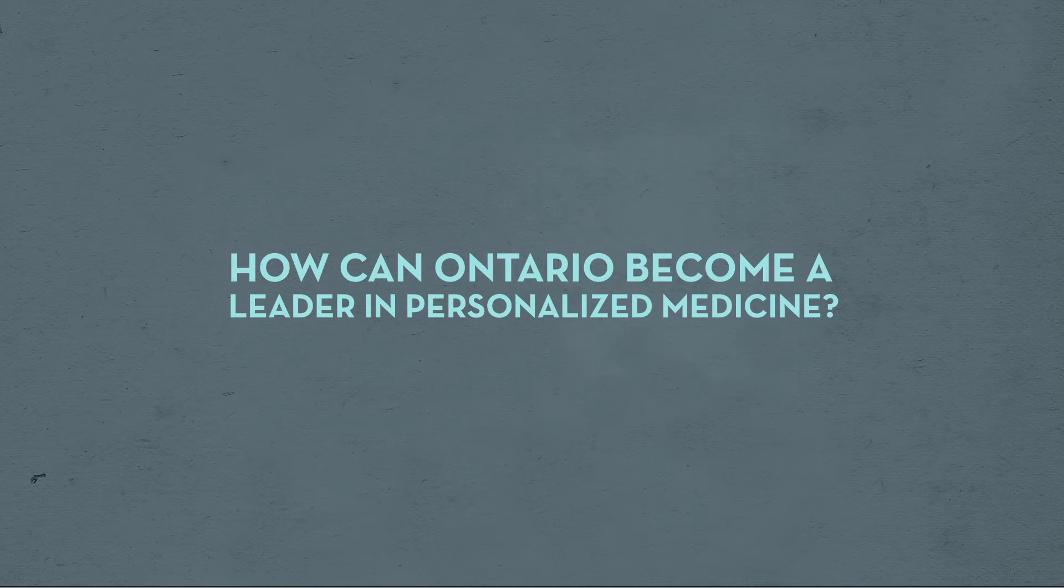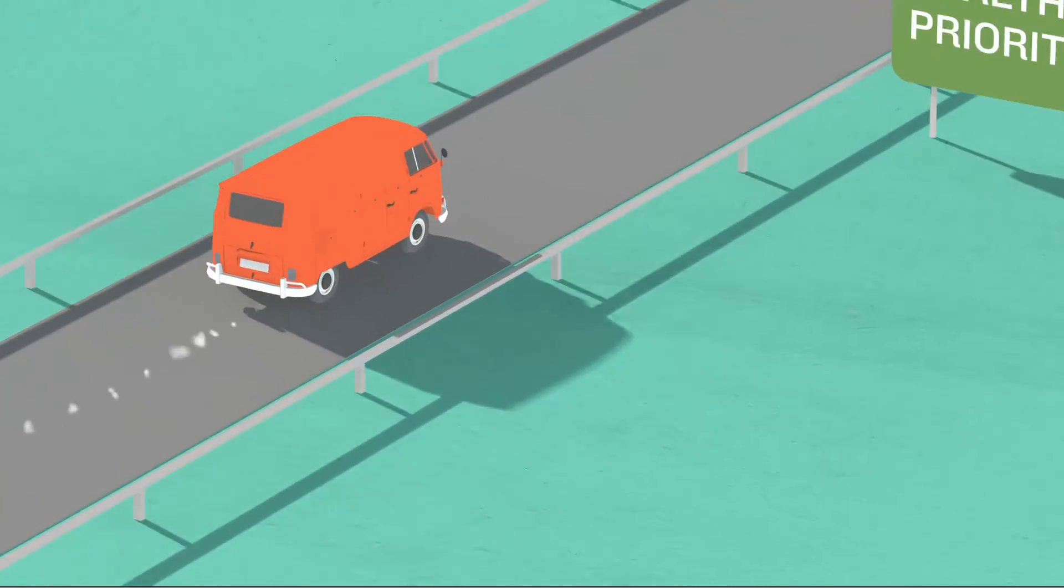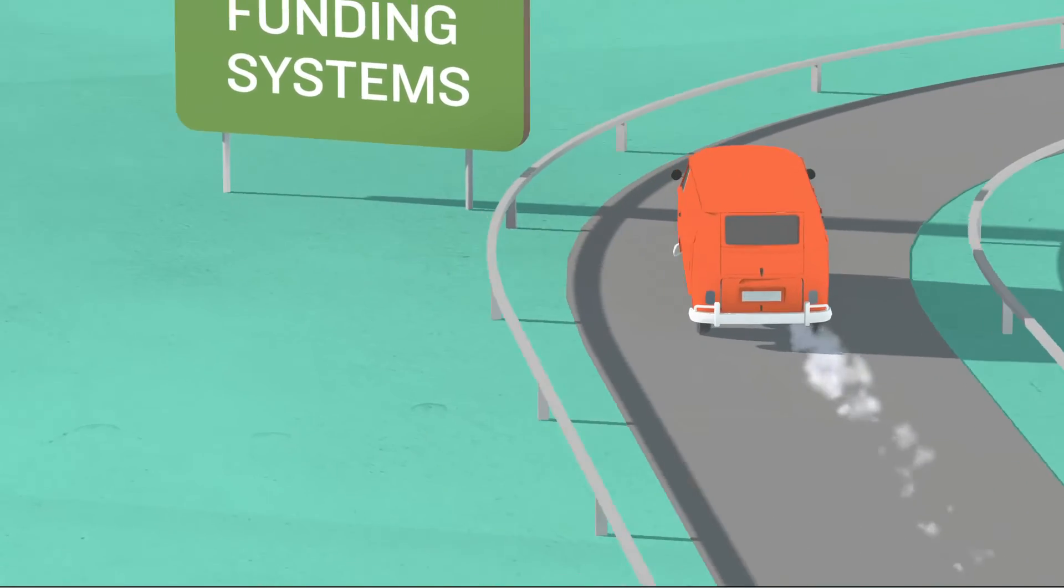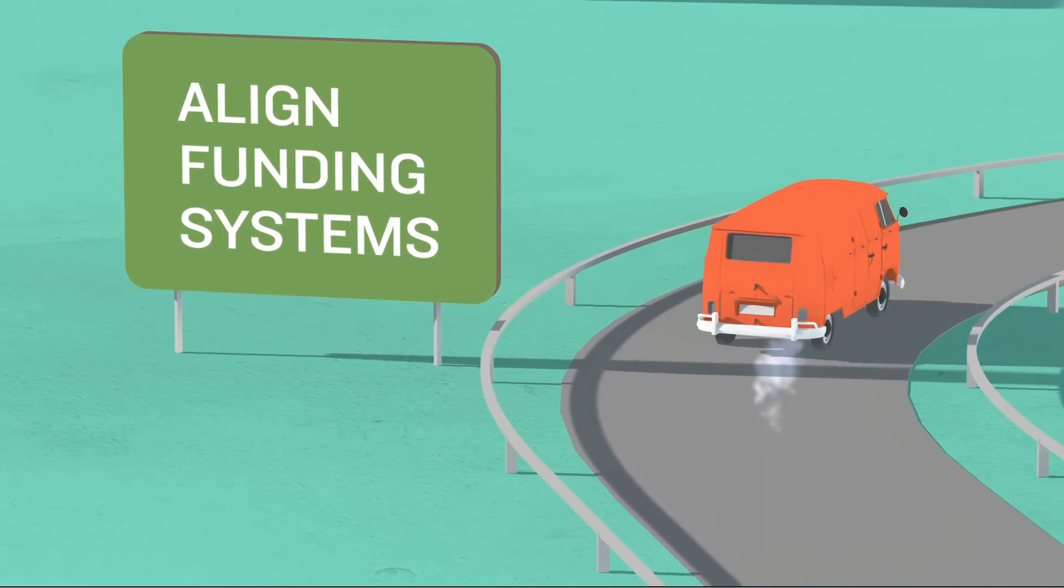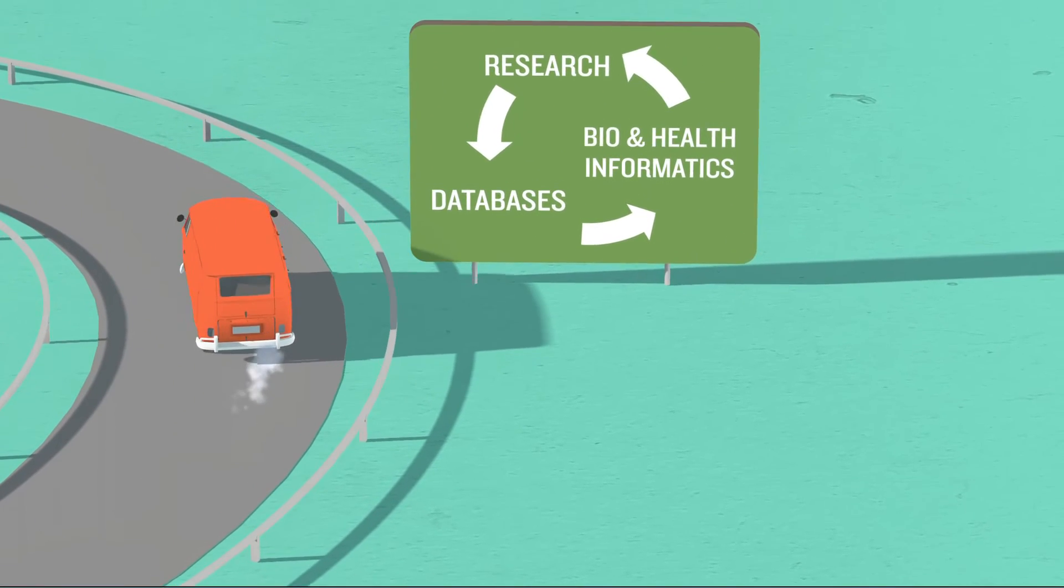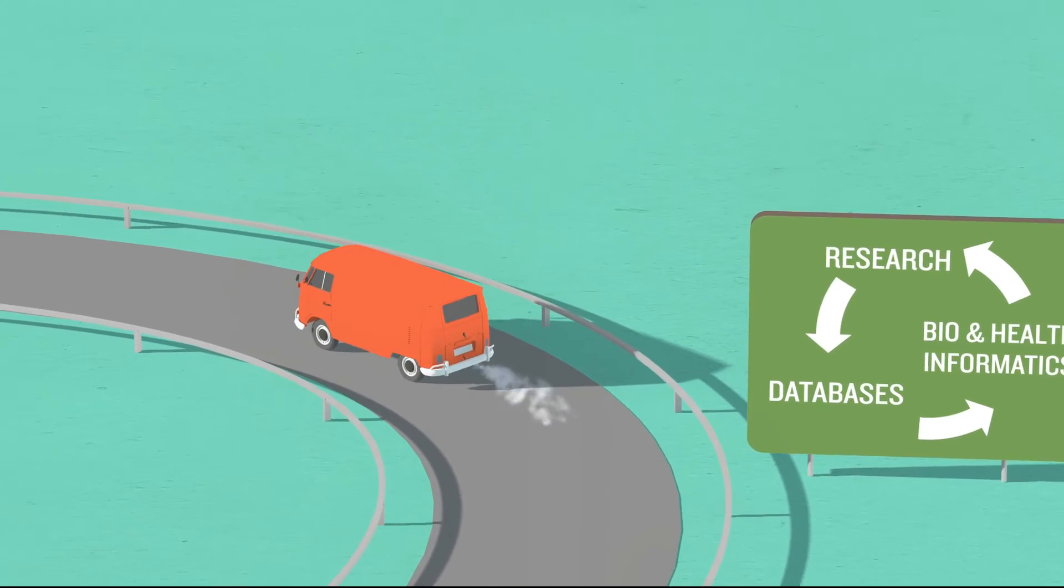So how can Ontario become a leader in personalized medicine? We have developed a roadmap. It begins when we understand healthcare priorities in our province, continues when we align funding systems that recognize priorities, and moves along when research, databases, and bio and health informatics are used to develop potential new healthcare solutions.